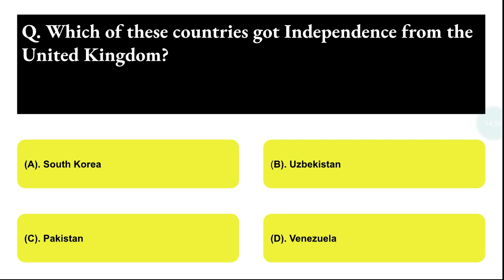Next question: which of these countries got independence on 14 August? Option A: Australia, Option B: Uzbekistan, Option C: Pakistan, Option D: Venezuela. The correct answer is option C, that is Pakistan.